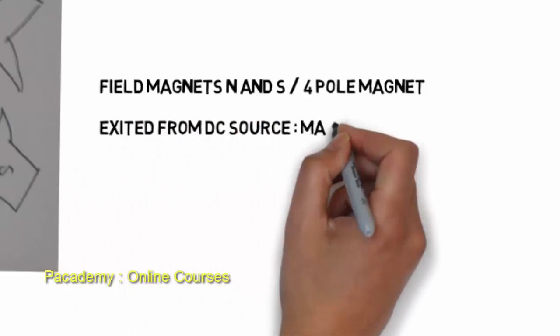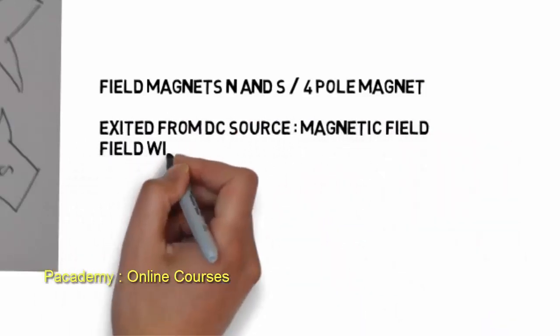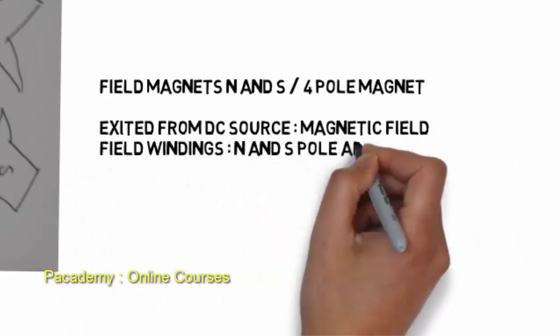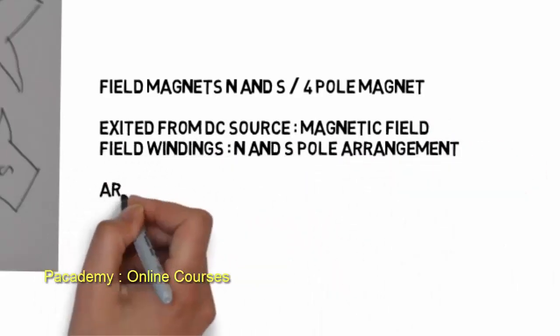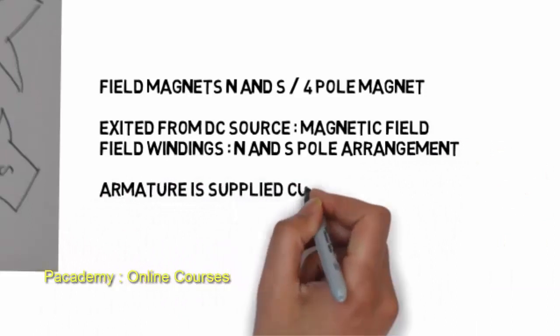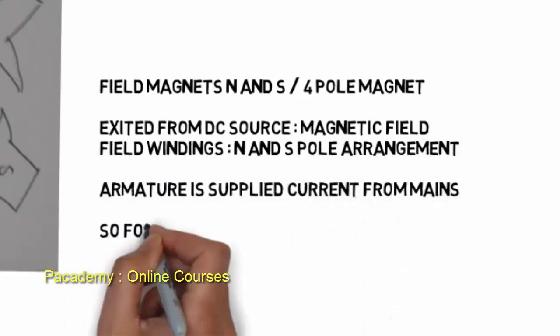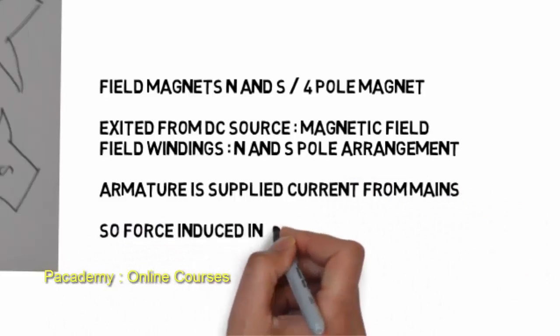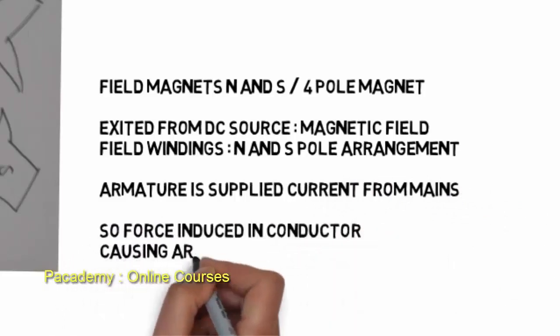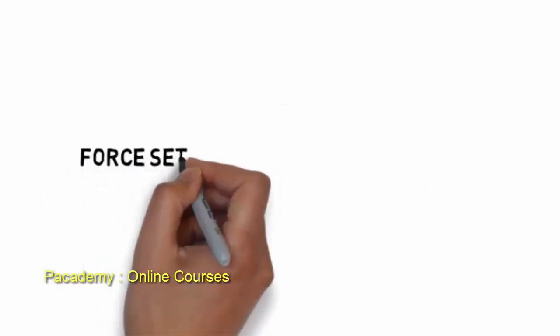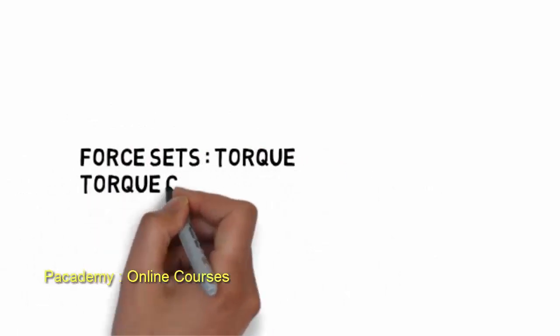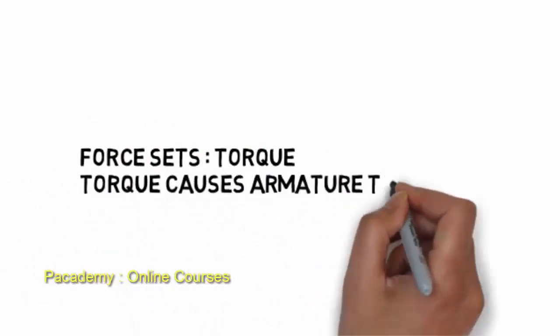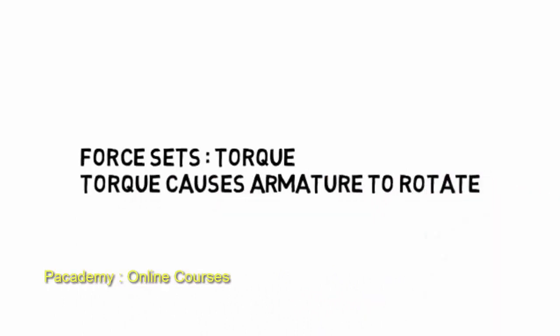The field magnets were four in number and were excited from a DC source, producing a magnetic field similar to DC generators, with north and south pole field windings. The armature is supplied current from the mains through a commutator, so a force is induced in each conductor which causes a torque, and this torque causes the armature to rotate. This is how a DC motor works at the basic principle level. That's all for understanding the working of DC motors — please subscribe, like, and comment.